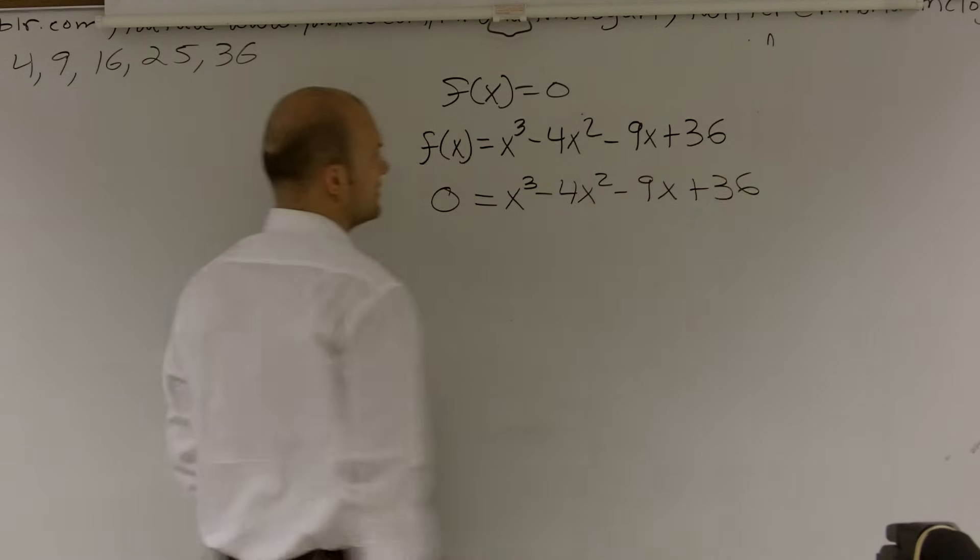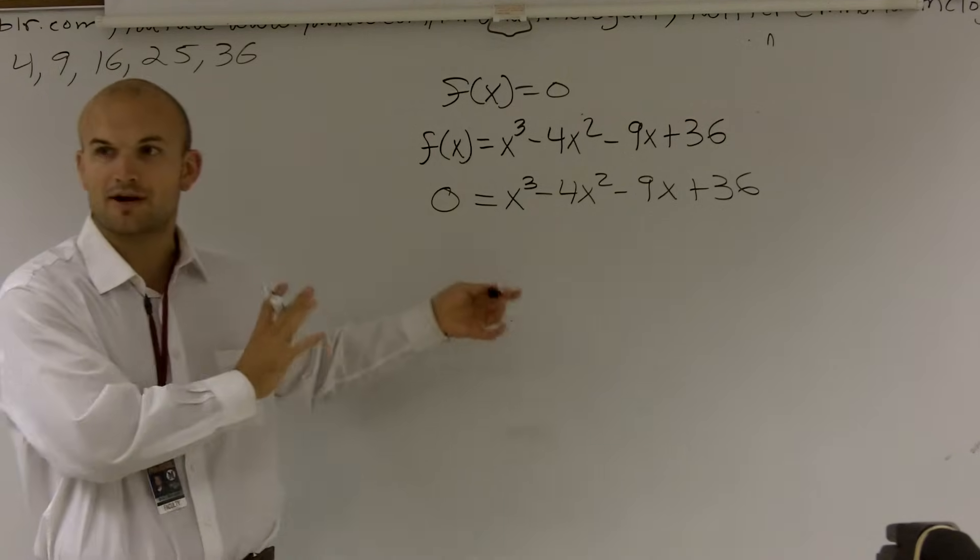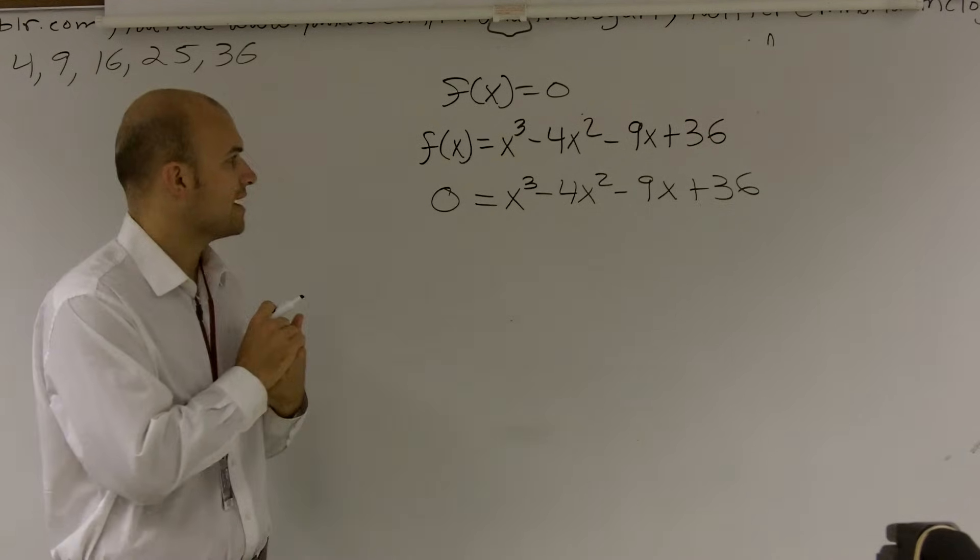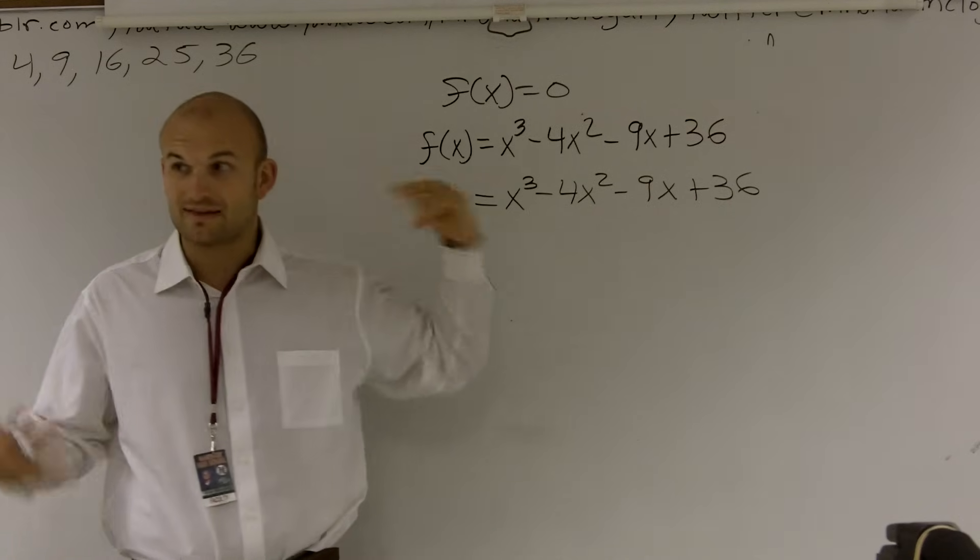Well, it used to be pretty easy to find the values of x because we had one x, and all we had to do is just solve for that one x. Isolate the variable, get everything on the other side, and solve for x. Here we have a lot of stuff going on. We have x cubed, a negative 4x squared, and a negative 9x. So we have a lot of x's.